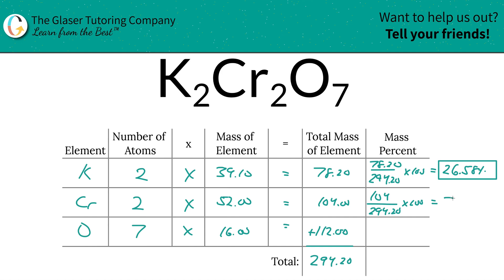Last but not least, we do the same thing for oxygen. Take the total mass of oxygen, 112, divided by the total mass of the entire compound, 294.20, multiplied by 100. See how redundant this gets over time—that's a good thing because it means you're practicing enough. So, 38.07%.